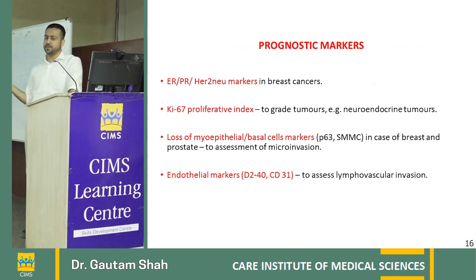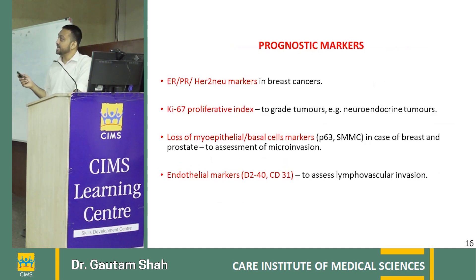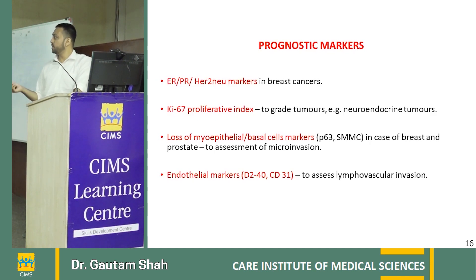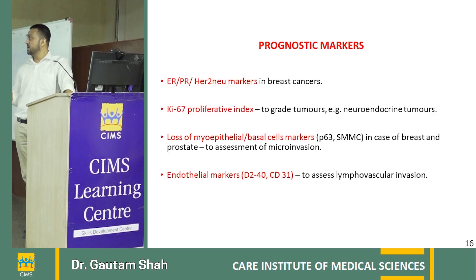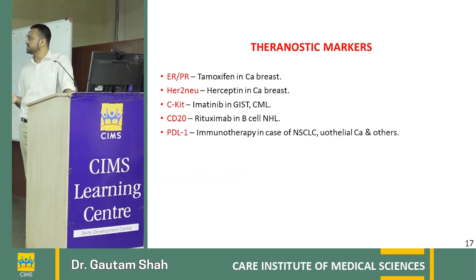Regarding prognostic markers, ER/PR, HER2, and BRCA markers are well known. ER/PR positivity indicates good prognosis; HER2 positive and triple negative are poor prognosis. Ki-67 proliferation index is a very good marker for grading tumors — high Ki-67 indicates high-grade tumor, low Ki-67 indicates low-grade tumor, and it is particularly useful in neuroendocrine tumors. When micro-invasion is suspected, markers like p63 and other myoepithelial markers on IHC can confirm breach of the epithelium into the stroma, which changes prognosis. Markers for lymphovascular invasion assessment are also used.